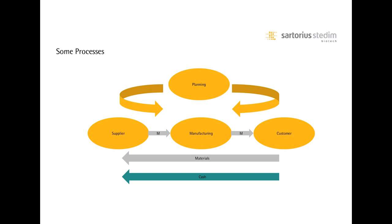Even if APICS, the American Production and Inventory Control Society, is considering that supply chain consists of at least seven basic elements, for managing them we may have a more important number of processes. I want to focus here on two processes that are critical in any supply chain: how to balance demand and capacity through an S&OP process, and how to mitigate risk of supply disruption.